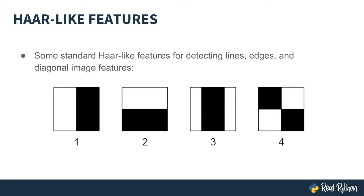Take a look at these Haar-like features. The first two are used to detect edges within a picture. The third one detects vertical lines, and the fourth one detects horizontal features. If our images were pure black and white, then these Haar-like features would be able to identify where lines and edges are perfectly. But these features are ideal — our pictures will never be all black and white. Instead, they're usually varying shades of gray.